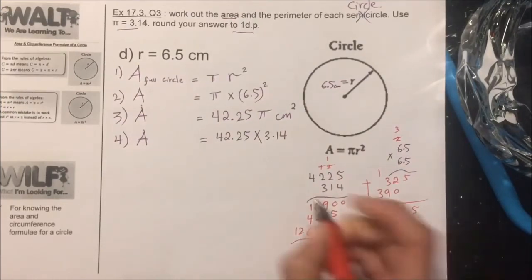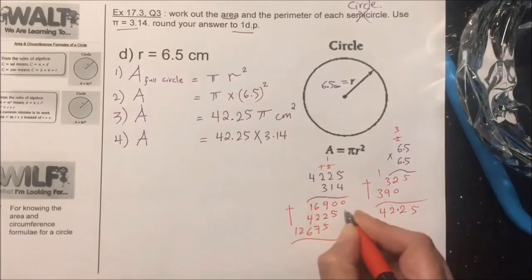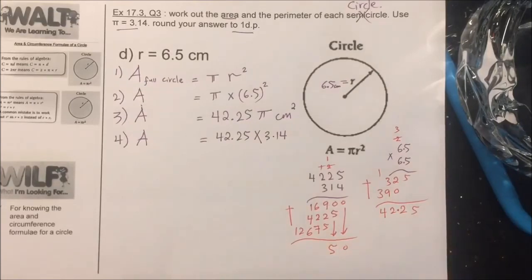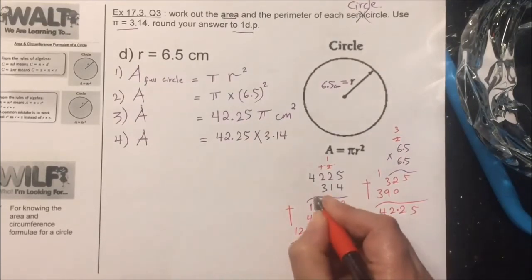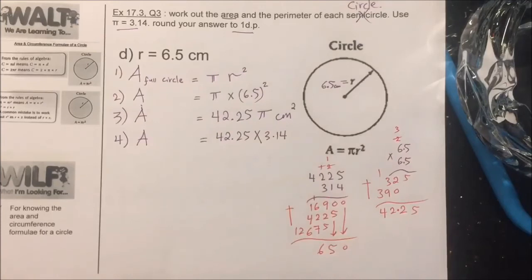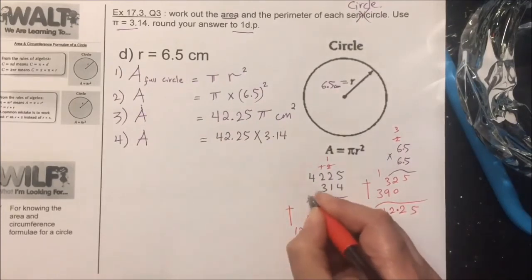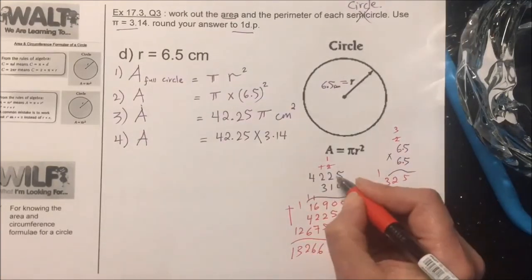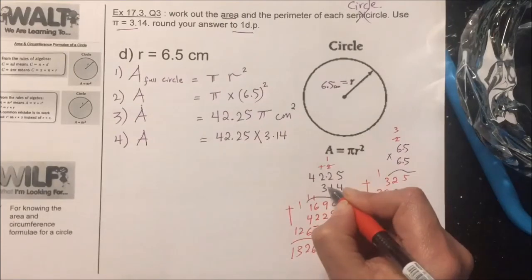Add 0, 5, 9. 9 plus 2 is 11. 11 plus 5 is 16. 1 plus 6 is 7. 7 plus 2 is 9. 9 plus 7 is 16. 1 plus 1 is 2. 2 plus 4 is 6. 6 plus 6 is 12. 1 plus 2 is 3 and 1.